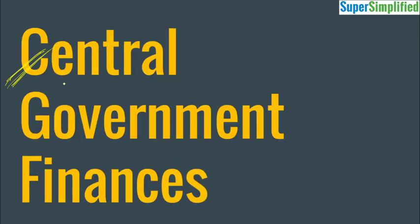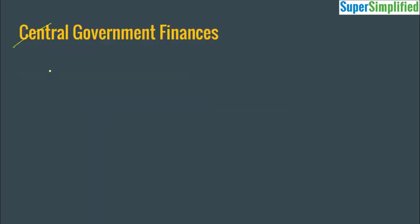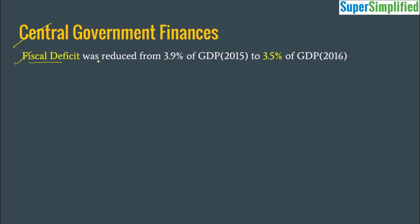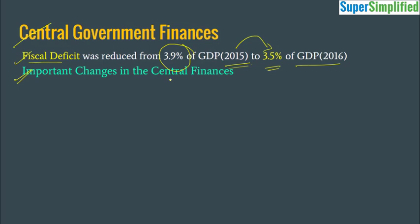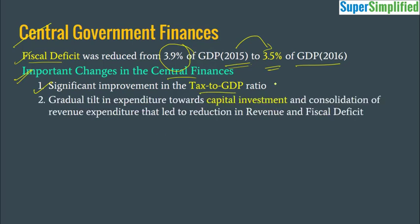Now let's look at central government finances in detail. Fiscal deficit was reduced from 3.9% of GDP in 2015 to 3.5% of GDP in 2016. Some important changes include: a significant improvement in the tax-to-GDP ratio because tax collection increased; a gradual tilt in expenditure towards capital investment, meaning quality of investment has improved; consolidation of revenue expenditure, which came down — all leading to the reduction in both revenue deficit and fiscal deficit.